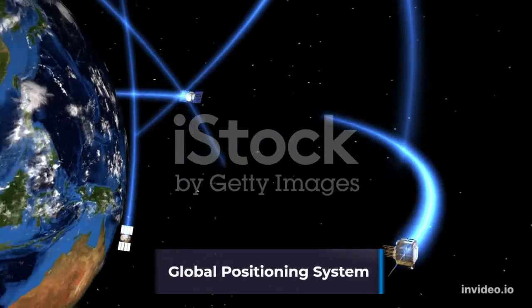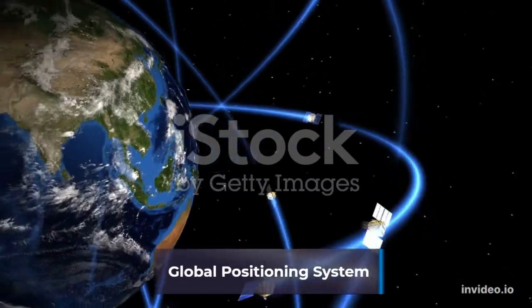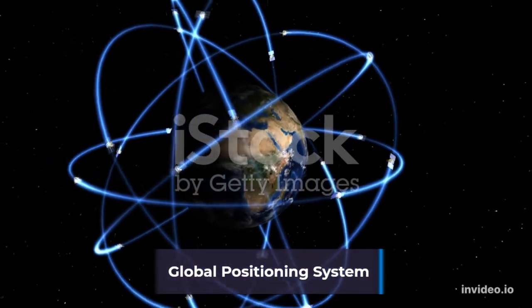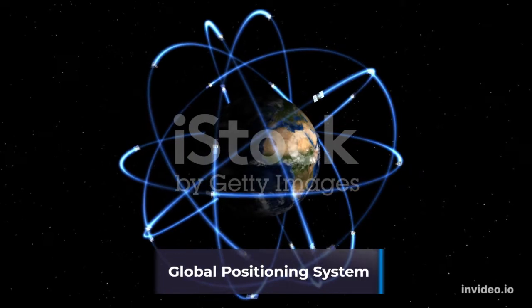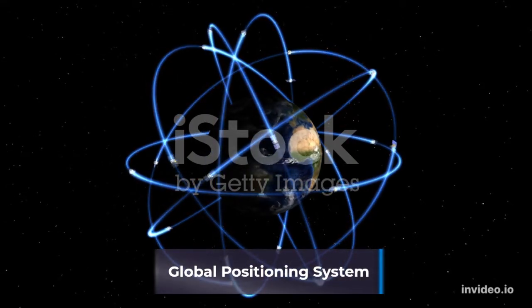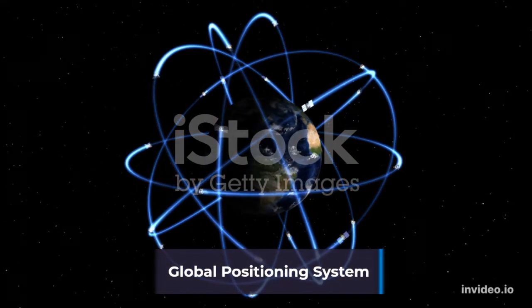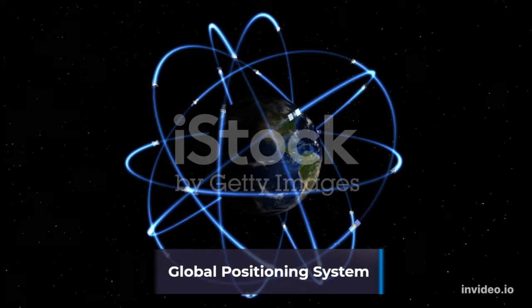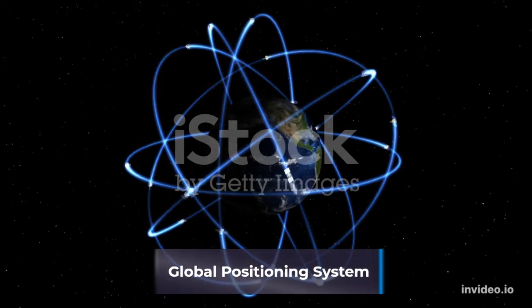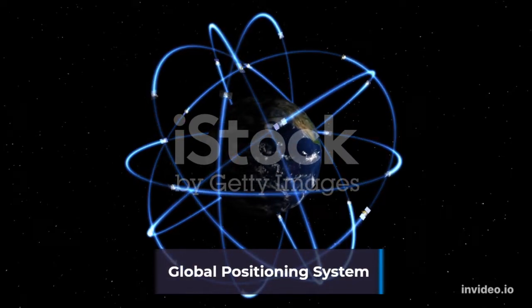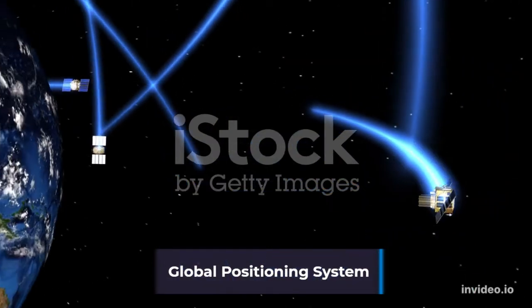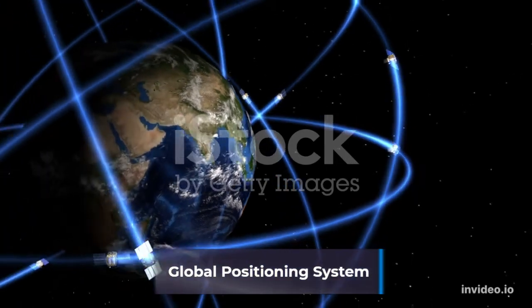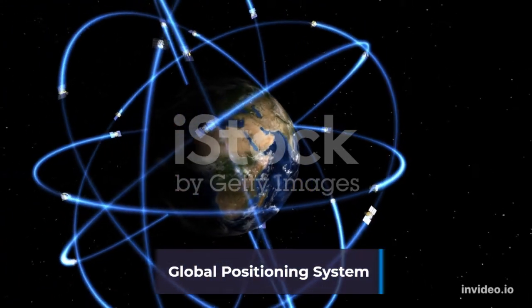GPS stands for Global Positioning System. It is a constellation of over 30 satellites orbiting Earth at about 20,000 kilometers above the surface. These solar-powered satellites circle the Earth twice every 24 hours while continuously transmitting radio signals to Earth. The constellation is arranged in six equally spaced orbital planes to ensure that at any point in time, radio signals from at least four of these satellites can reach a GPS receiver anywhere on Earth.